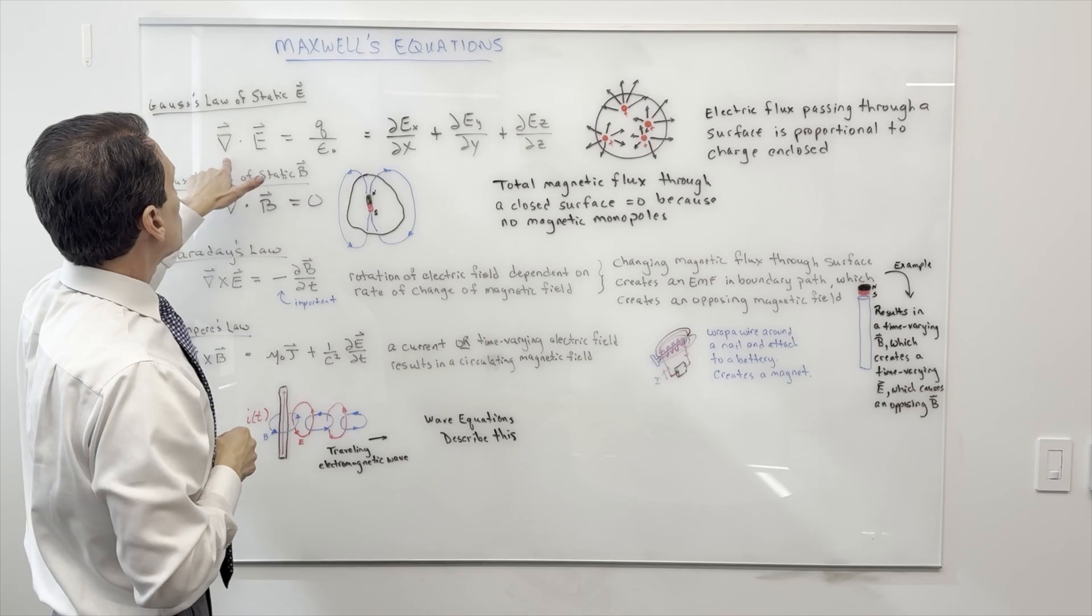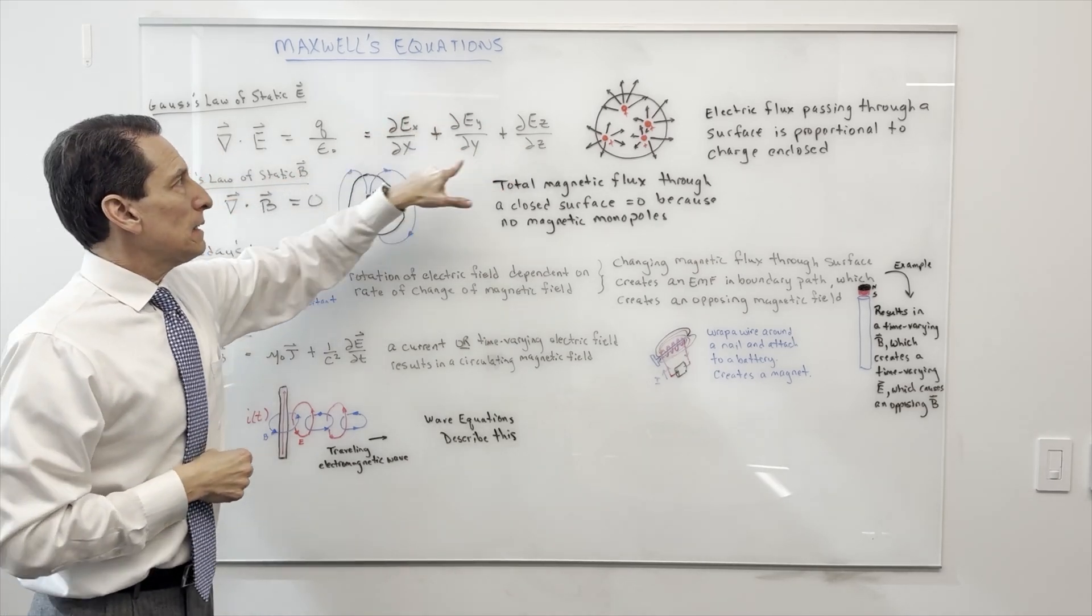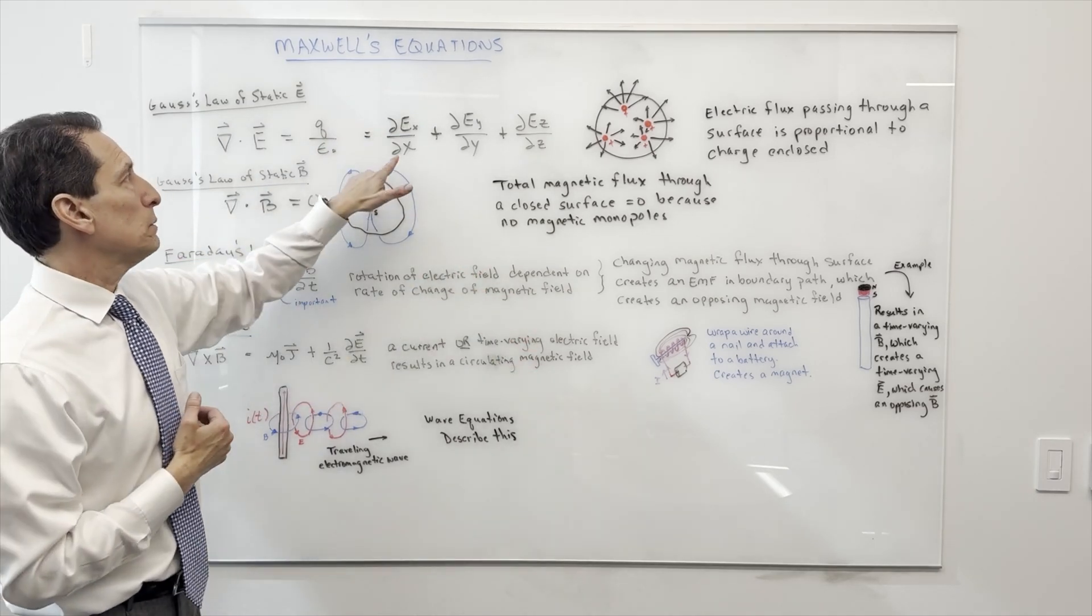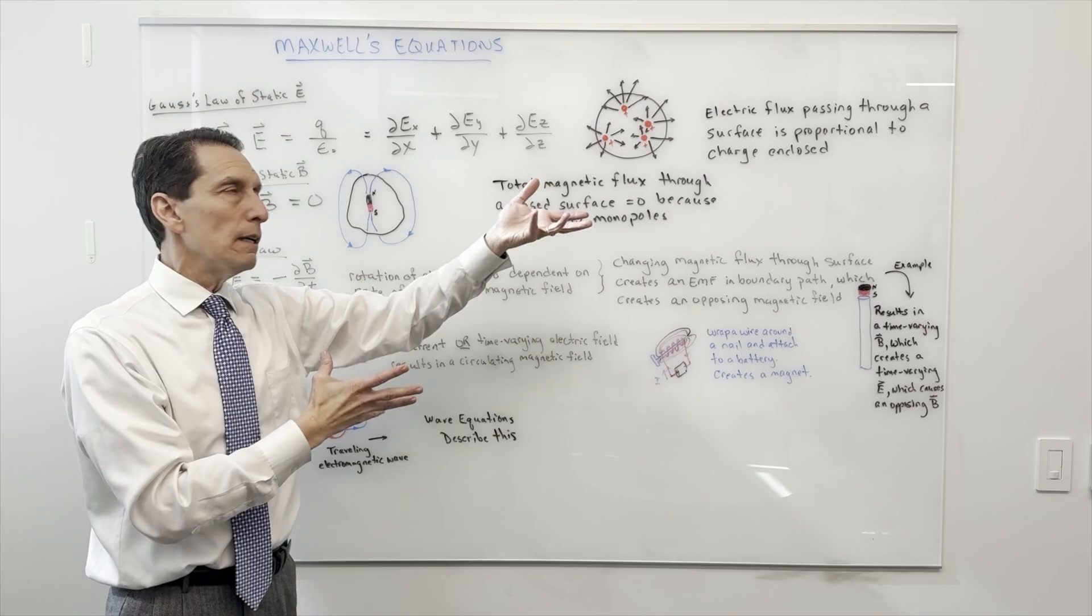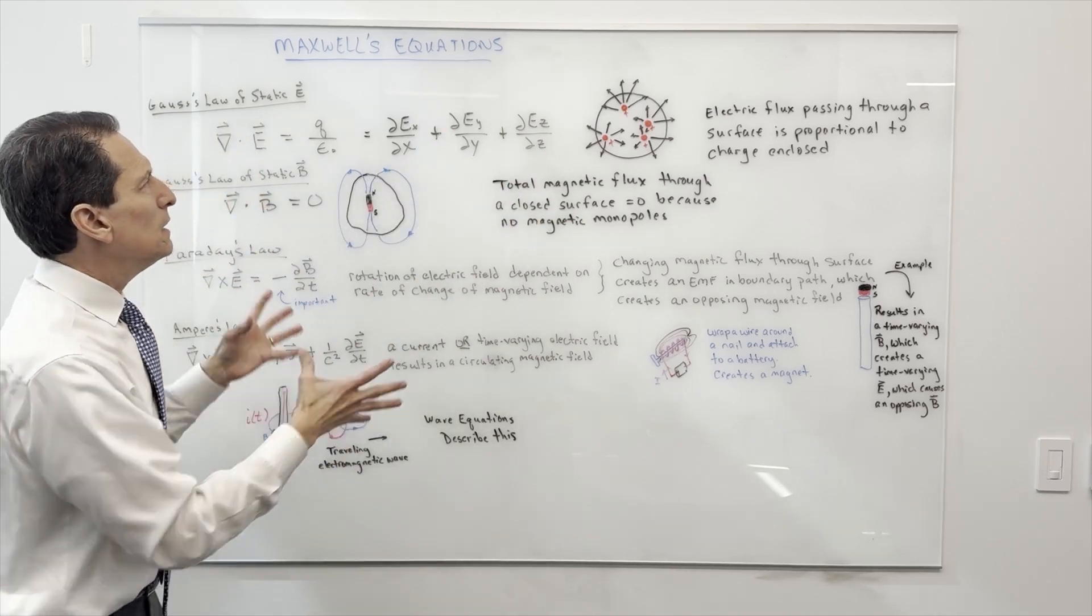This term here, this del·E, mathematically means the change in the x component of the electric field with respect to x, plus the change in the y component of the electric field with respect to y, and then so forth with the z direction.